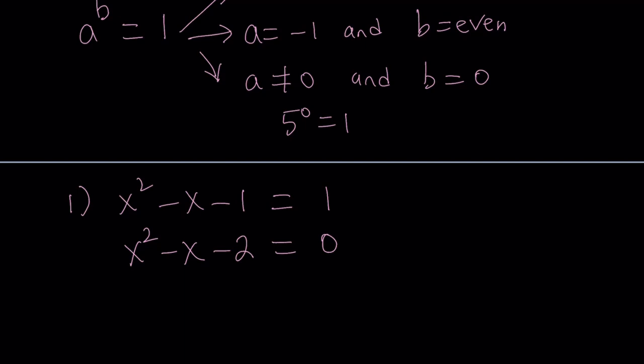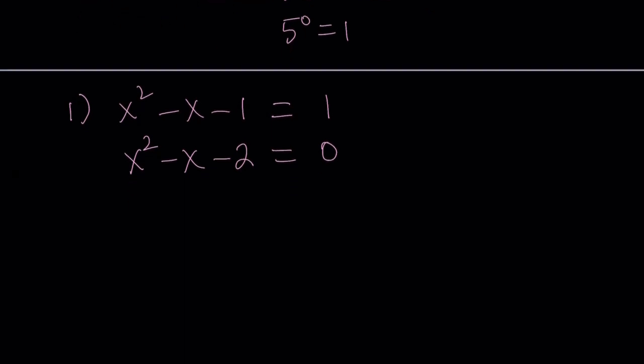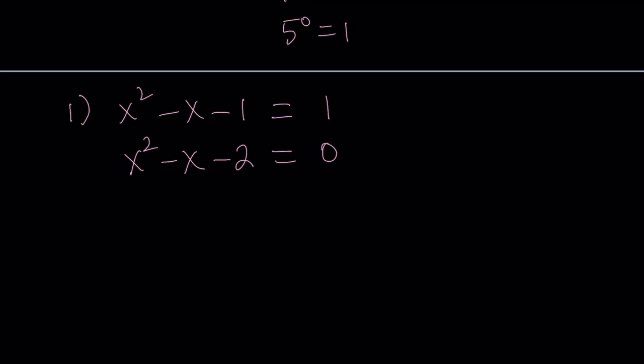If you subtract 1 from both sides, you get x squared minus x minus 2 equals 0, and that is a quadratic equation. So we can solve it. And this is a factorable quadratic equation, so we can go ahead and write it as x minus 2 times x plus 1 equals 0. You're looking for two numbers whose product is negative 2 and whose sum is negative 1. Those numbers are negative 2 and 1, and they make up the factors. From here, we get the x values. x is equal to 2 or x is equal to negative 1. So we got two solutions.